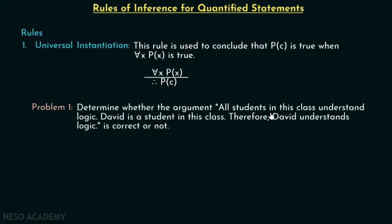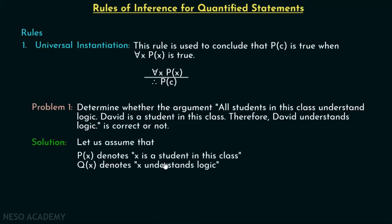Determine whether the argument — all students in this class understand logic; David is a student in this class; therefore, David understands logic — is correct or not. We have two premises and one conclusion. Let P(x) denote 'x is a student in this class' and Q(x) denote 'x understands logic.' From the first statement, we can write: for all x, P(x) implies Q(x). This is our first premise.